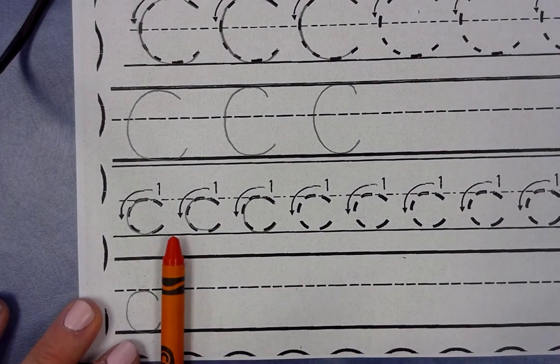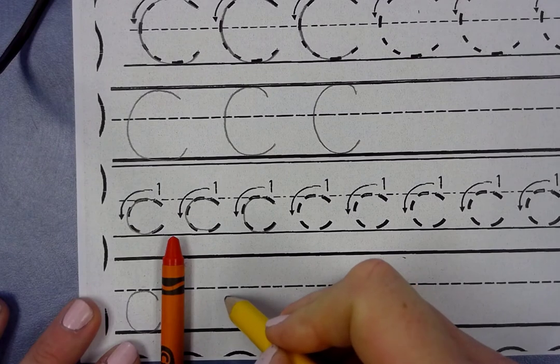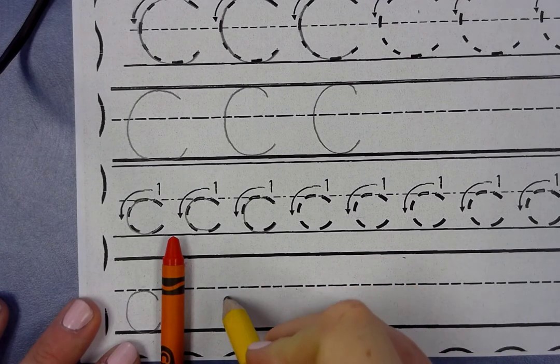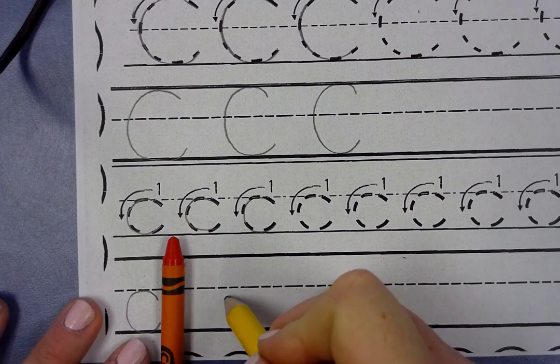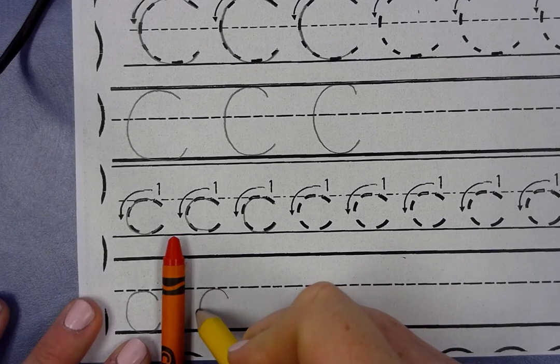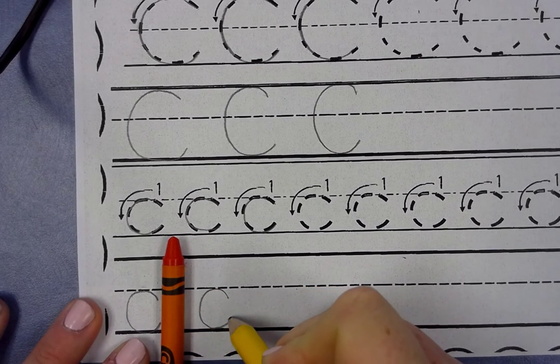I'm going to get my color there, so that I have my finger space. And I'm going to start again, just a little bit below the dotted line. I'm going to go up to the dotted line, down to the bottom, and around.